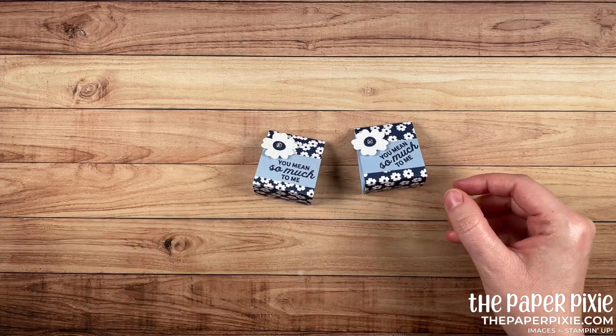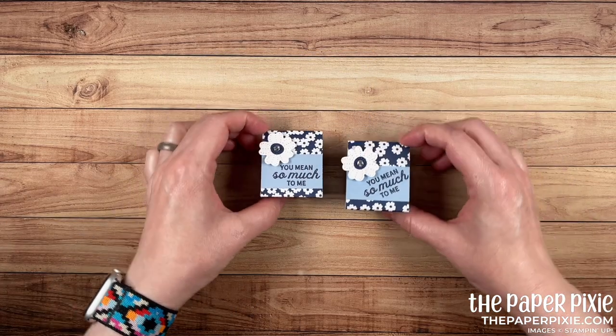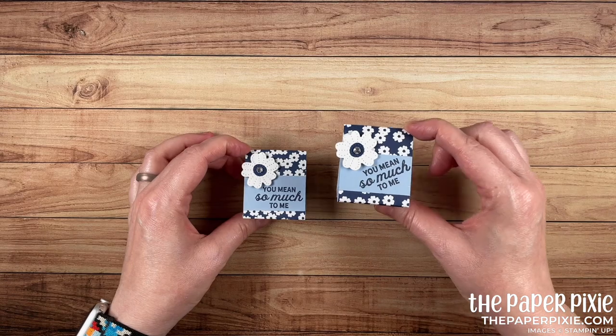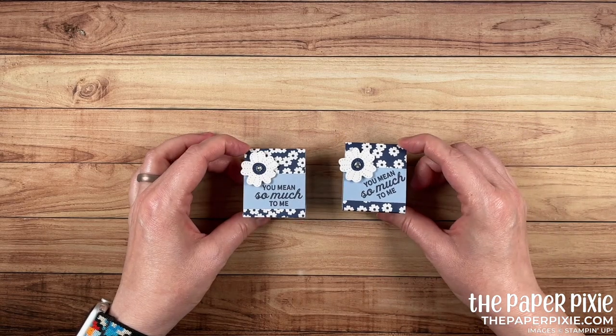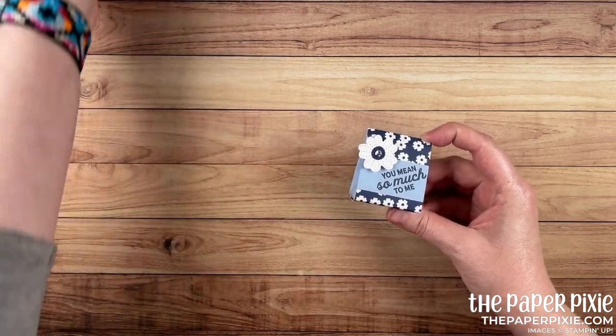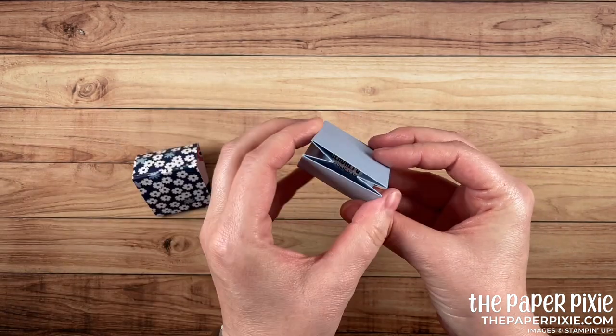I shared this project along with a coordinating card on my live broadcast this week. And my live viewers voted on which way they liked the sentiment, straight or angled. Angled seemed to win, so we're going to make this version today. But this treat box is so cute and easy to make. It just slides off. There's this paper belly band.